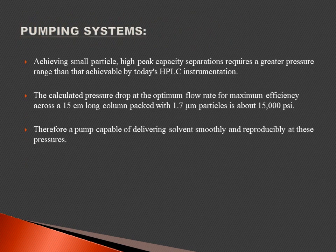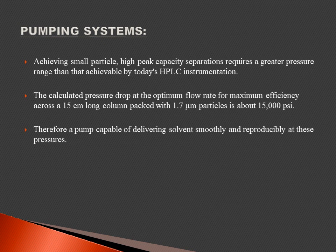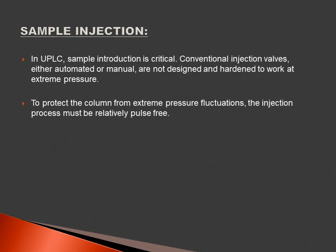For the pumping system: achieving separation with small particles and high peak capacity requires greater pressure. The pumping system generates high pressure so that solvent reaches the column. The calculated pressure drop at optimum flow rate for maximum efficiency across a 15 cm long column packed with 1.7 micrometer particles is approximately 15,000 to 19,000 psi. Therefore the pump must be capable of delivering solvent smoothly and reproducibly at this pressure. For sample injection, the autosampler must be designed to work at extreme pressure; the injection process must be relatively pulse-free to protect the column.